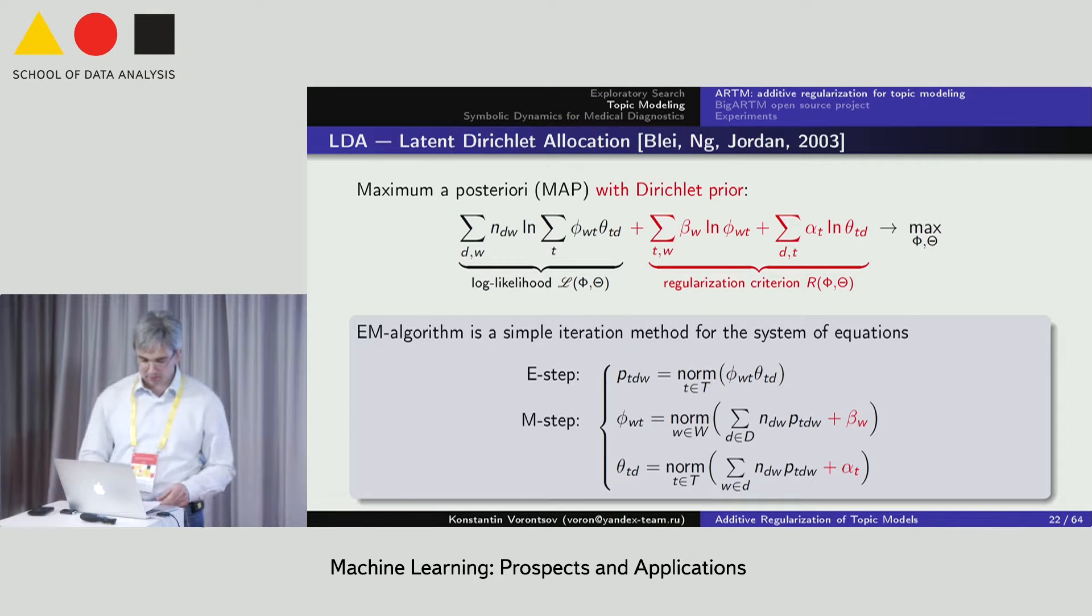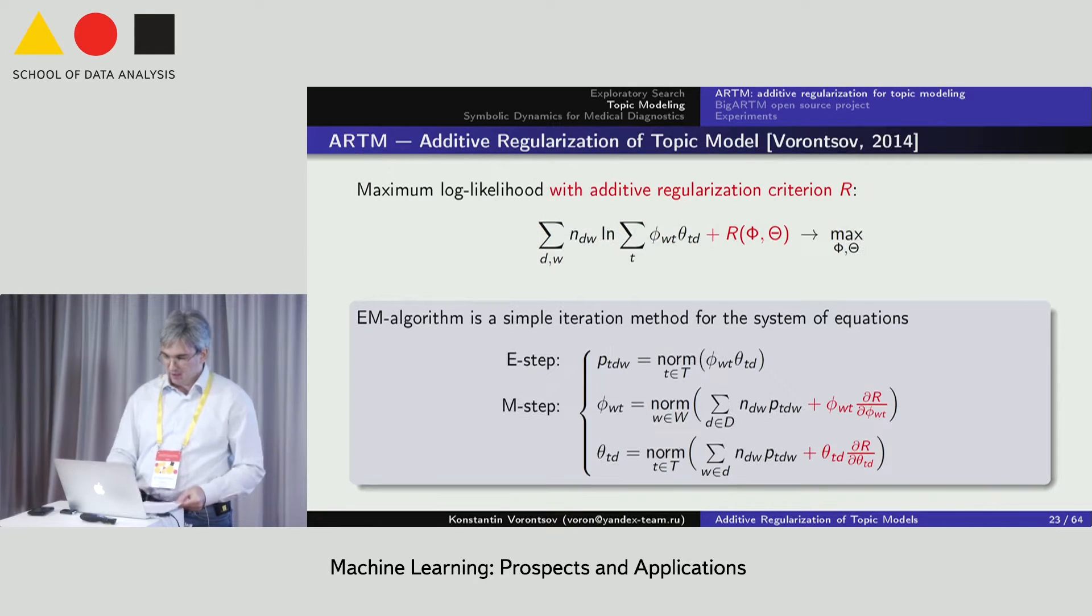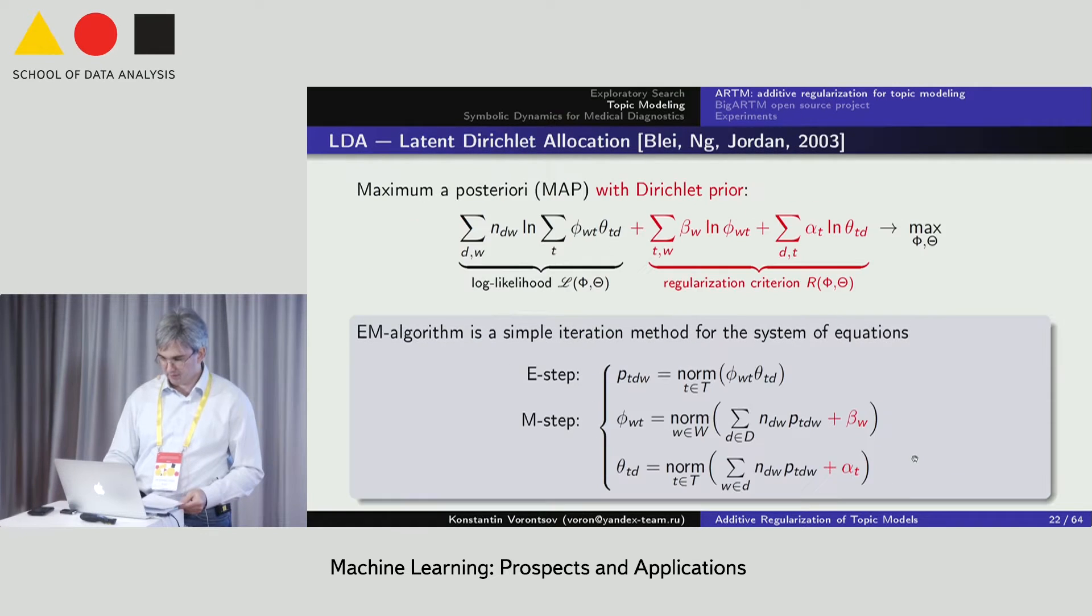The next significant advance in topic modeling was the latent Dirichlet allocation proposed by David Blei, Andrew Ng, and Michael Jordan. Up to now, their paper is the most citable in topic modeling research field. They proposed to use Dirichlet prior distribution for regularization. And also, they proposed variational Bayesian inference. Thus, predetermined their development path of topic modeling for the next decade.